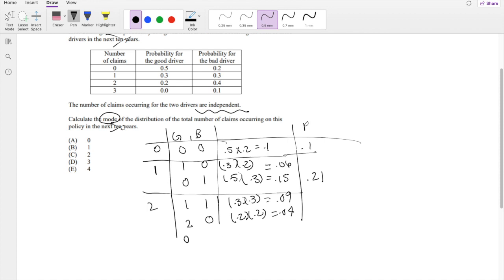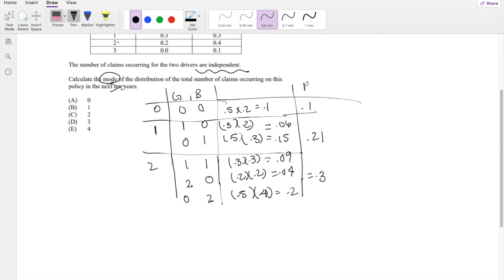Or when good driver has 0 and bad driver has 2. When good driver has 0, that's 0.5. 2 is 0.4 for bad driver. So that's 0.2. So this adds up to 0.33.